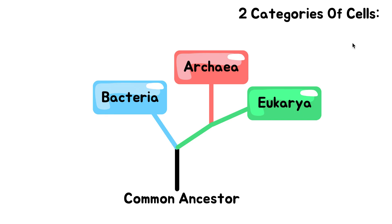So what are these two categories based off? If you consider a long time ago there was a common ancestor. All organisms originated from this common ancestor, and over time it branched — many different organisms started existing and they branched out into these three domains: Eukarya, Archaea, and Bacteria. Then Eukarya split into more branches, Archaea more branches, Bacteria its own branches, and it got more and more complex. But it all started from this common ancestor.